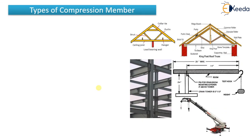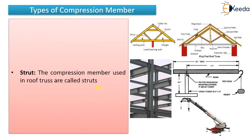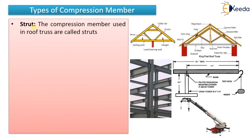Now let us see what are the types of compression member. The first type is a strut. A compression member which is used in a roof truss is called a strut. As you can see in the diagram, this one is a strut. It is generally an inclined member in a roof truss, and any compression member in a roof truss is known as a strut.